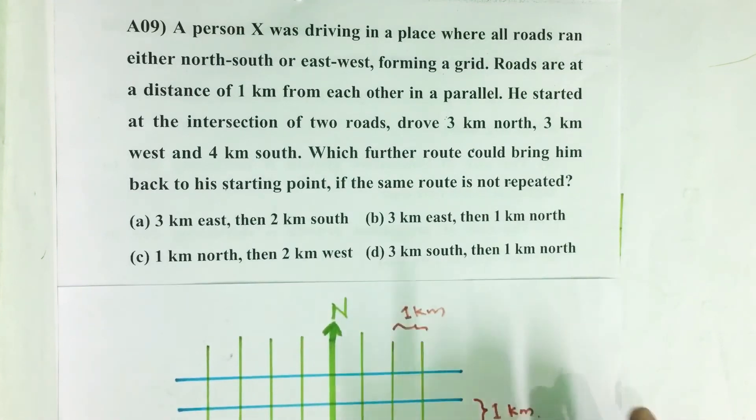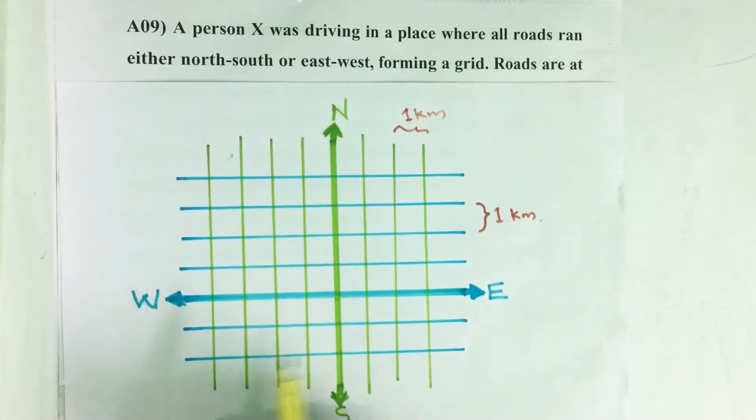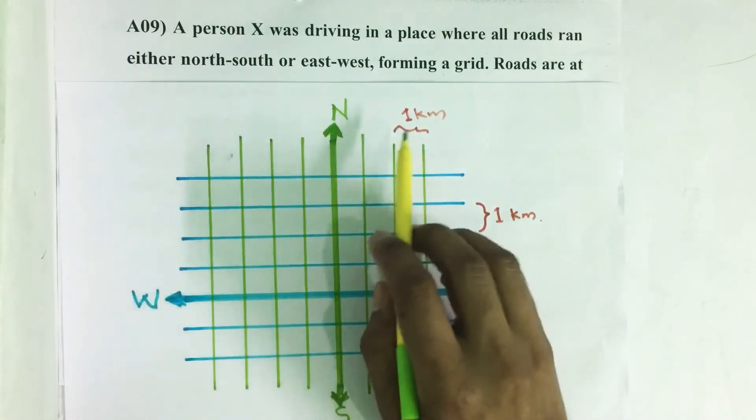So here we have four options. It is given that there are roads which are east-west in direction and north-south in direction. The north-south roads are parallel to each other and 1 kilometer apart.